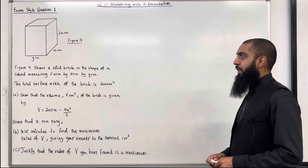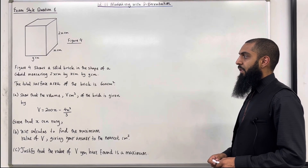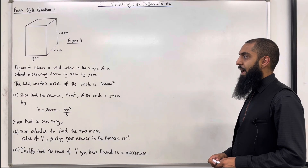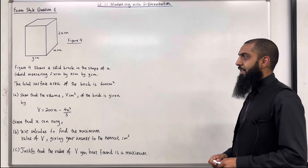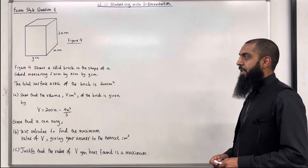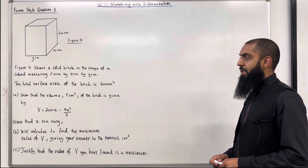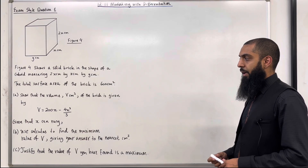Figure 4 shows a solid brick in the shape of a cuboid measuring 2x cm by x cm by y cm. The total surface area of the brick is 600 cm squared. Part A shows that the volume, v cm³, of the brick is given by v equals 200x minus 4x cubed over 3.